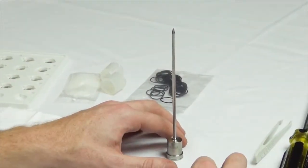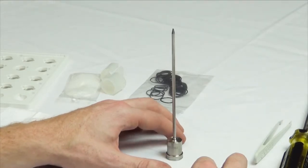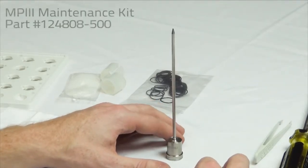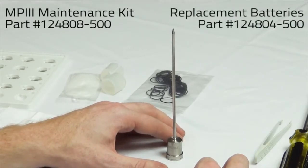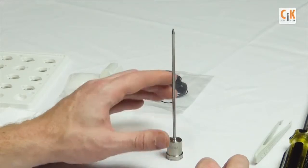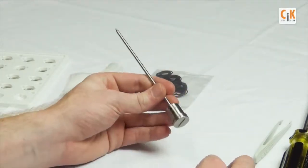In this video you're going to learn how to change an MP3 battery. This video assumes that you're using an MP3 maintenance kit part number 124808-500 and replacement battery parts are 124804-500, and that's a package of 20.